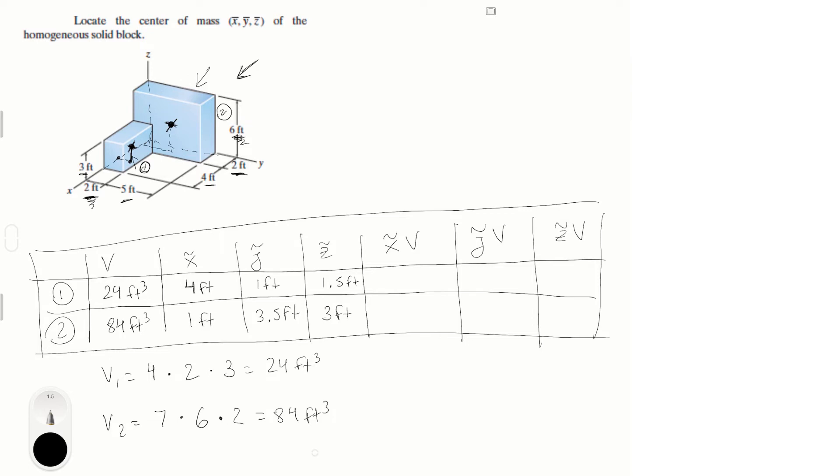Now all you gotta do is multiply the volume by each of the coordinates to fill out the rest of the table. So I'm just going to do it really quick: 96 feet to the fourth, 24 feet to the fourth, and 36 feet to the fourth, which you get by multiplying the volume by each of these three figures. We repeat for the bottom and we get 84 feet to the fourth, 294 feet to the fourth (sorry, this is not cubed, this is to the fourth), and this is 252 feet to the fourth.